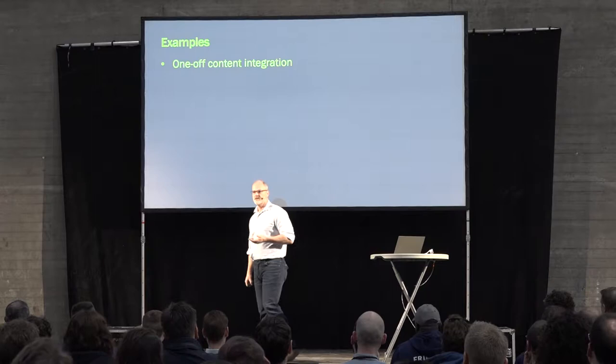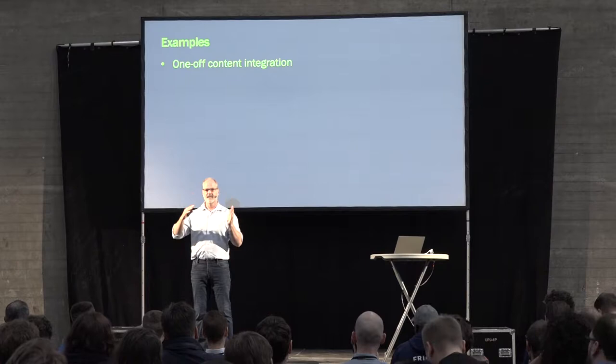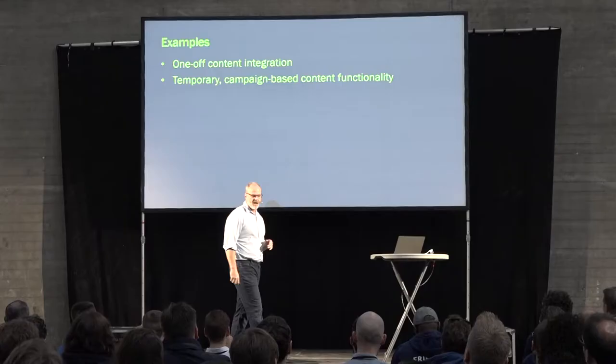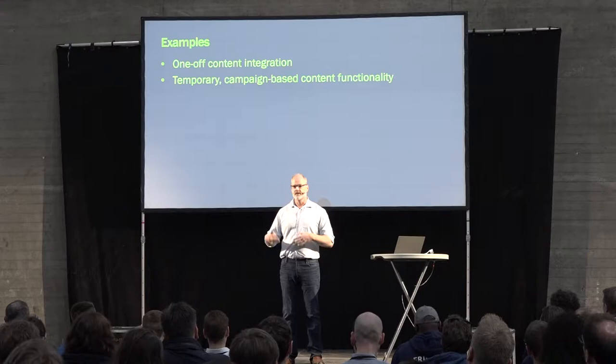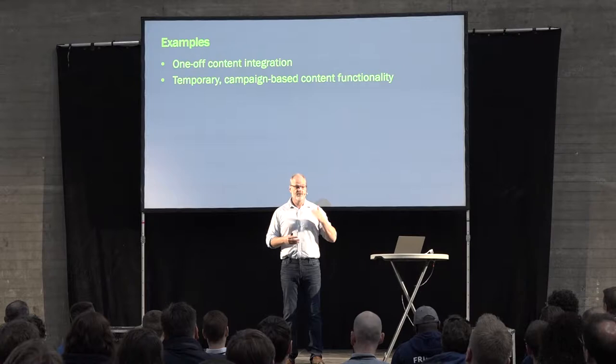Some examples of situations where this might play out. One would be one-off content integration — where you have content types built out for the main pages of a site but there's one special thing on one page. Could we handle that a different way instead of completely changing our integration? Another example is temporary campaign-based content functionality — your organization wants to show the temperature in Moscow on one page for a campaign.